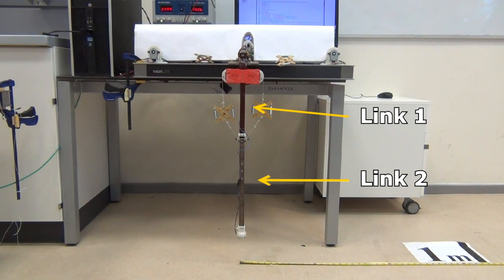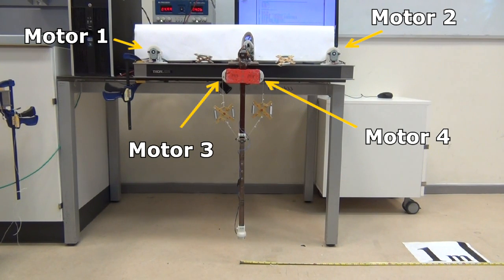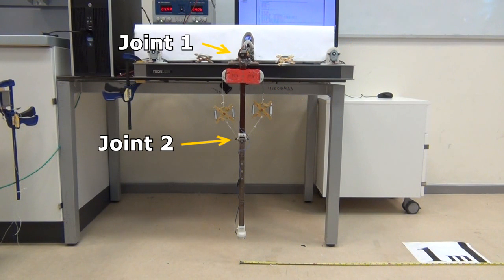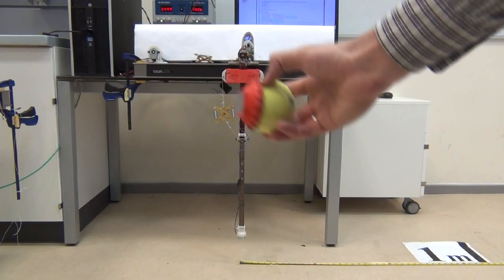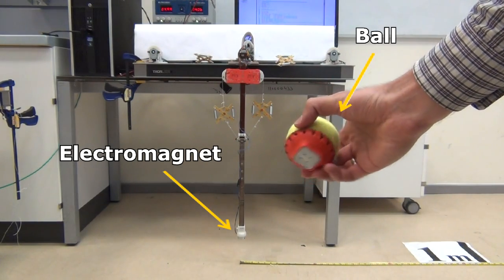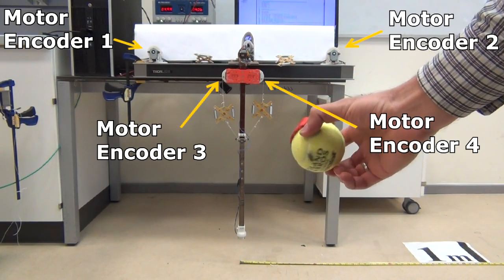The robot consists of two links and is actuated by four smart motors connected to the joints via four nonlinear elastic elements. The ball is attached to the robot with an electromagnet. Motor and joint positions are measured with high-resolution capacitive encoders.